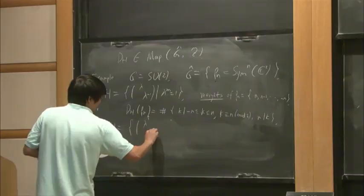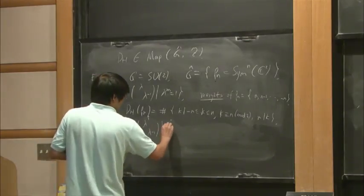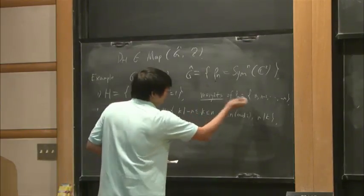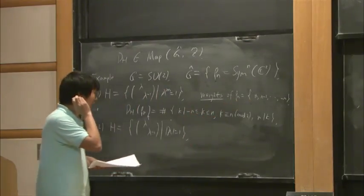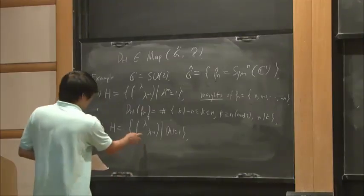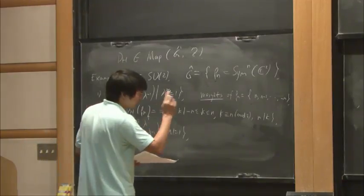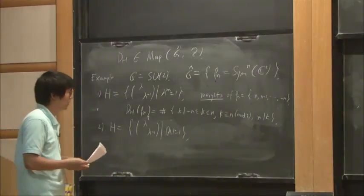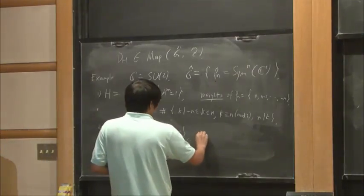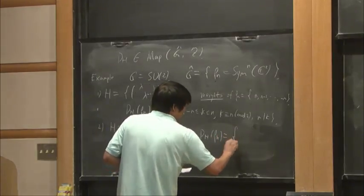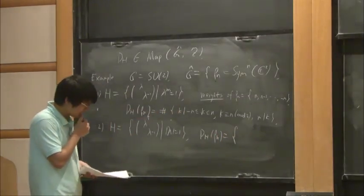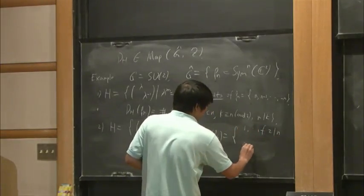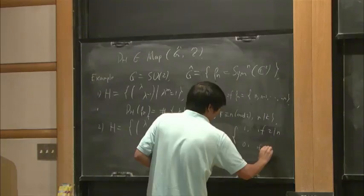Now we take the torus. In this case, again, the set of weights are in this form, but we take the whole torus. So only the weight zero, eigenvector is invariant. So in this case, the dimension of invariant vectors is 1 if N is even, and 0 if N is odd.